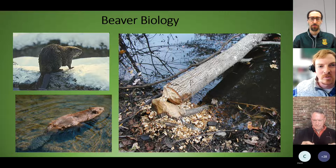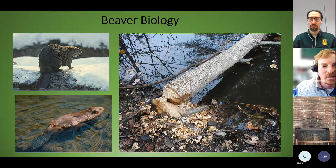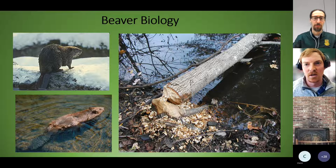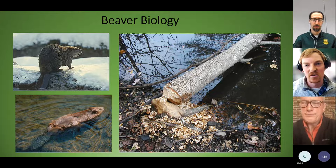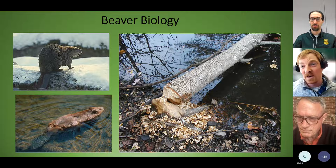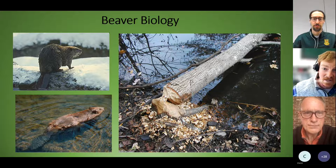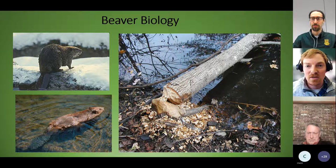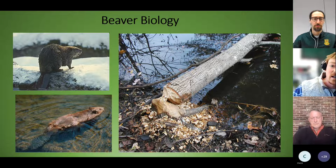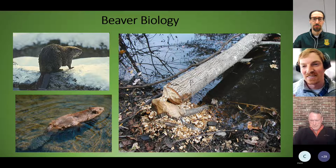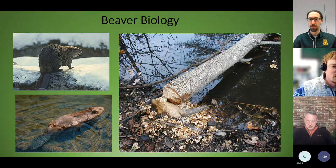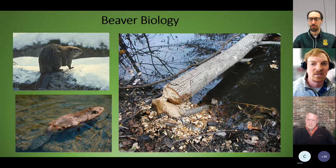On land, beavers are fairly clumsy and awkward, although they can move quickly when they need to. They're really adapted to life in and around water — they're an aquatic mammal and rarely venture far from water. They have a torpedo-shaped body, large webbed hind feet, and a flat tail for efficient swimming. They have transparent membranes over their eyes to see underwater, almost like swim goggles, and their nose and ear channels automatically close when they dive. They can exchange up to 75% of the air in their lungs to usable oxygen, allowing them to stay underwater for up to 15 minutes — compared to only about 15% for humans.